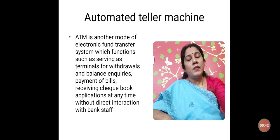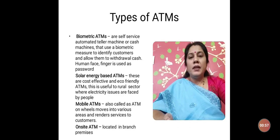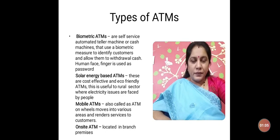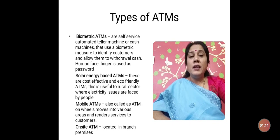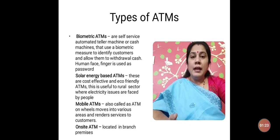There are different types of ATMs that are functional. Firstly, Biometric ATMs. In a regular ATM, a customer uses his card and PIN number or password, and the machine identifies the customer to carry on banking transactions. But in Biometric ATMs, these machines use a biometric measure to identify the customer — which can be the face, the finger, or the retina of the customer.